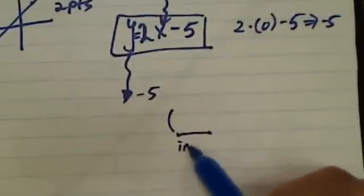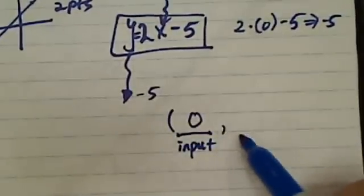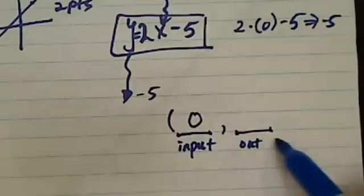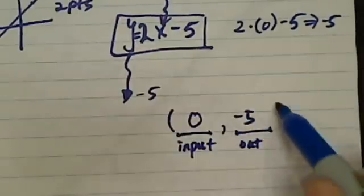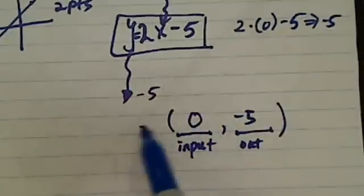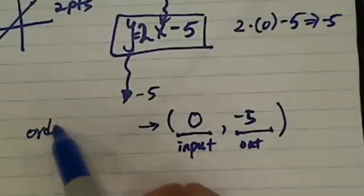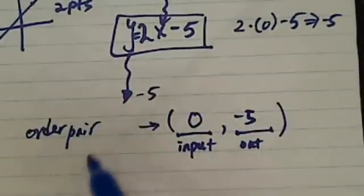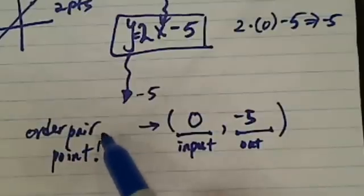And what you do with this information is you put the first input information in the first place. This is the input, and we put a 0 in there. What do we get out? We got a minus 5 out. This is called an ordered pair. It's really just a point.